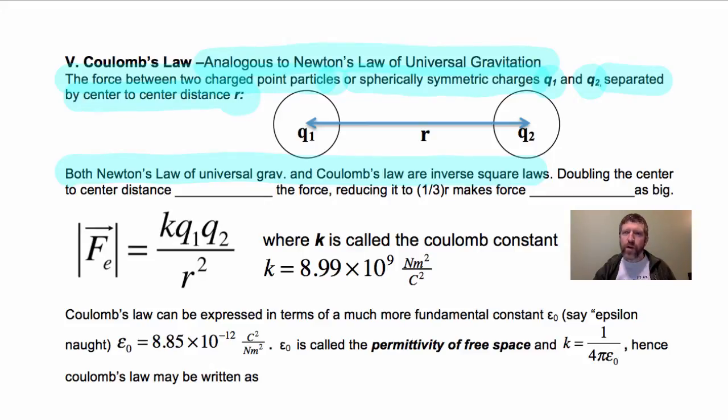Well, inverse square, one over doubling squared is one-fourth. It would quarter the force. If you reduce the center-to-center distance to one-third of what it was before, what would that do to the force? That would make the force nine times as big.